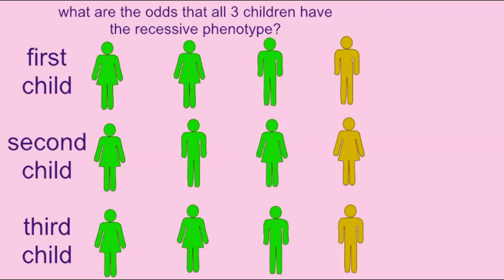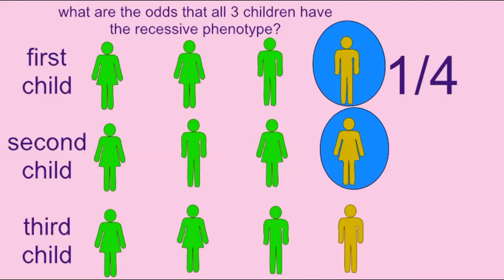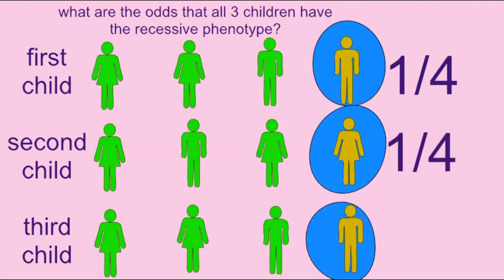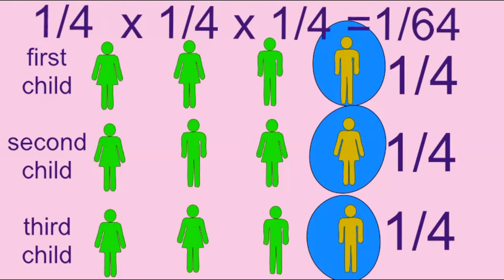If two carriers of a Mendelian recessive trait have three children, and one asks what are the odds that all three would have the recessive trait, one would multiply the odds that the first child would have the recessive trait — which is 1 in 4 — times the odds that the second child would have the recessive trait, which is 1 in 4, multiplied by the odds that the third child will possess the recessive trait, which is 1 in 4. Thus, there is a 1 in 64 chance that these two carriers have three children which all possess the recessive trait.